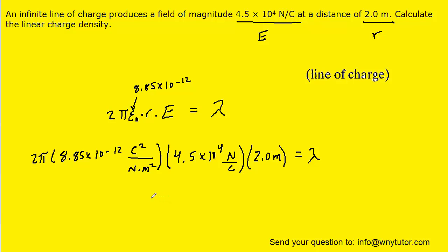So we've gone ahead and plugged in the known values. When we compute this, we get approximately 5.00 times 10 to the minus 6 as the value for lambda.